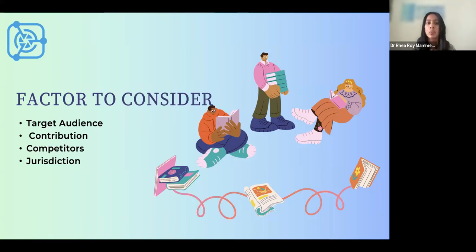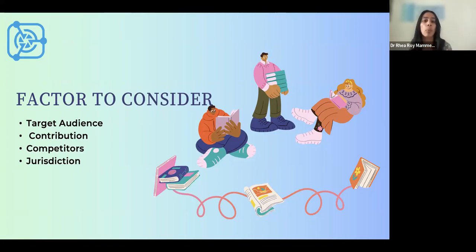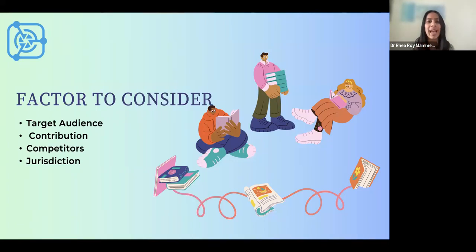The second most important thing is what contribution your research publication would be making. A dissertation has standard elements: the historical part, conceptualization, and theoretical framework. What is important is what your research contributes to the existing pool of knowledge. Identifying this will also help you decide whether you want it to be a journal article, a monograph, or a book, and will inform your writing style. If you already have a dissertation, identify what area of contribution you've made and whether there's sufficient material for a monograph, book, or journal article.